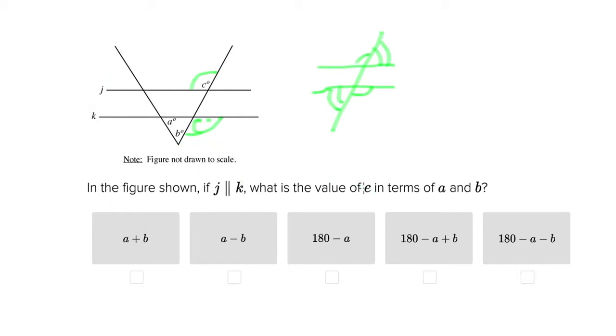And then all we have to do is solve for C in terms of A and B. We also know that all of the angles inside a triangle, if you add them all up, no matter what their measurements are, they add up to 180.